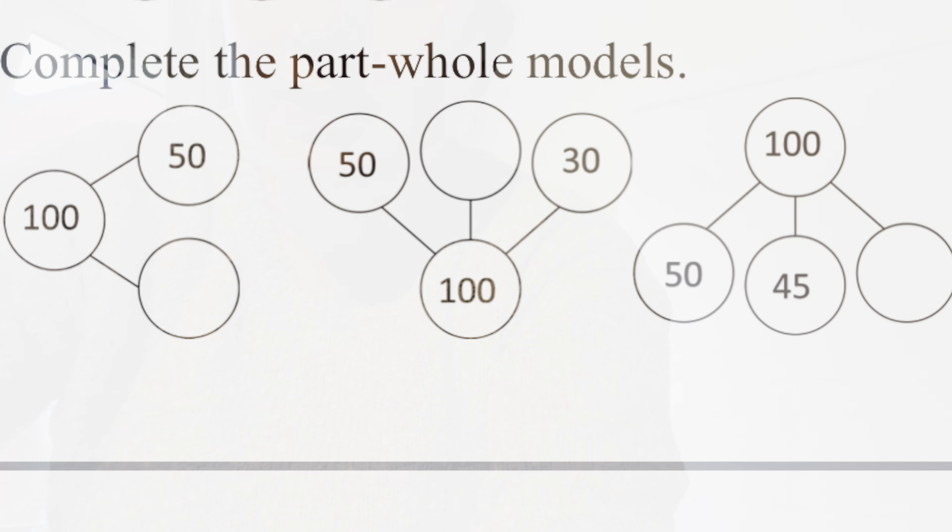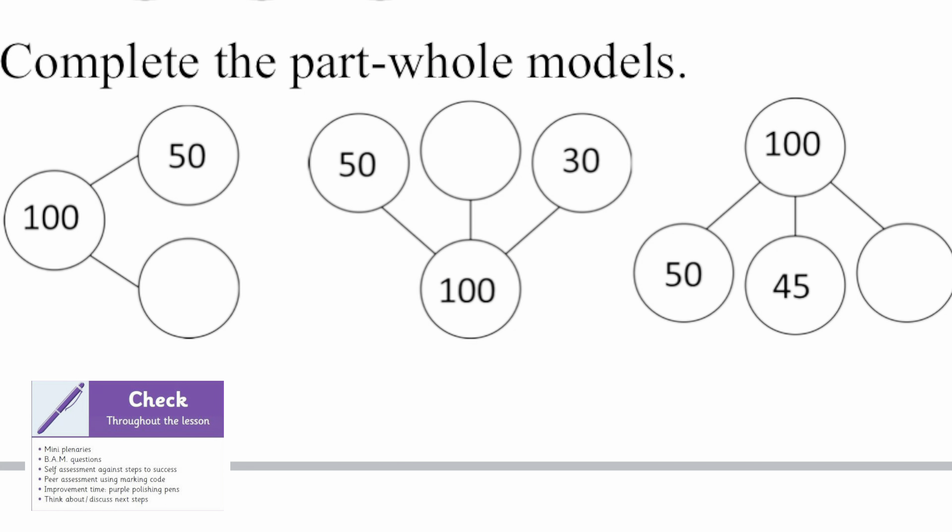Well done, you batted back 37. Are you ready? 153 — excellent, you batted back 163. 10 more. 83 — 93, well done. 226 — 236. Well done. Ping pong is a game you can play with somebody at home. You can change the rules. Think carefully about who you could play with today or over the weekend.